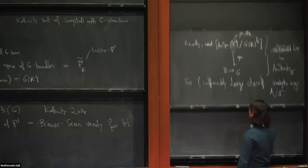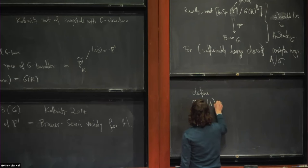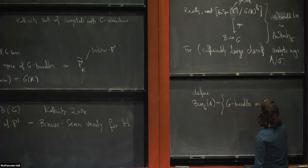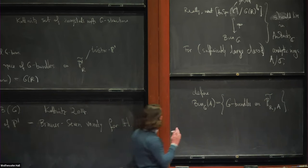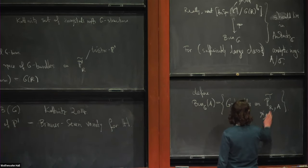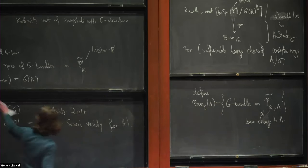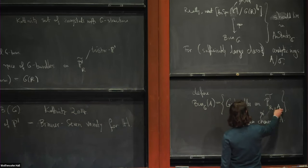For analytic rings A over the complex numbers, we should figure out what the A-valued points of this Bun_G are. We expect this to be some kind of moduli space of G-bundles on some version of the twistor P1 — some families of the twistor P1 parametrized by A. But you should not just base-change the twistor P1 to A — that is definitely not what you want, because if you just base-changed to A you would rather end up seeing G as an algebraic group again. This base change should not live over the complex numbers; it should live over the real numbers.